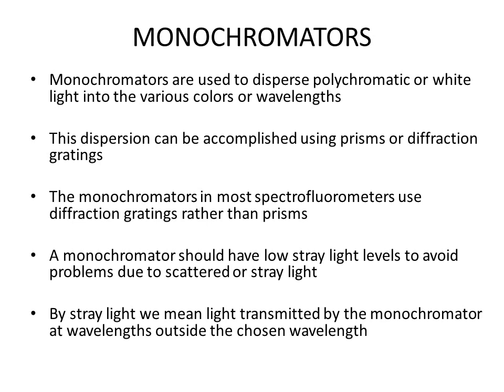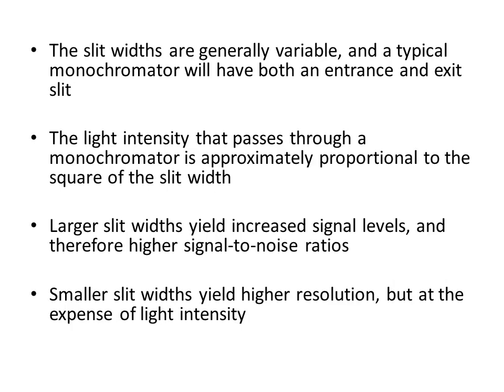The efficiency of a monochromator can be analyzed through its stray light level — it should have a low stray light level to avoid problems due to scattered or stray light. Stray light means light transmitted by the monochromator at wavelengths outside the chosen wavelength. You set your instrument at some wavelength, but the instrument also allows other wavelengths through — that radiation is stray light. The slit widths are generally variable.